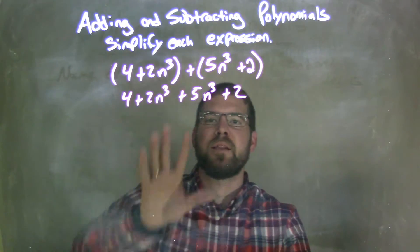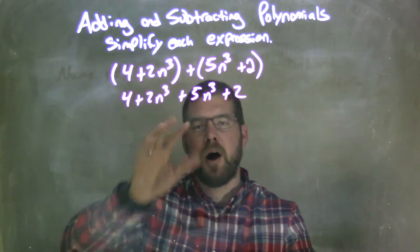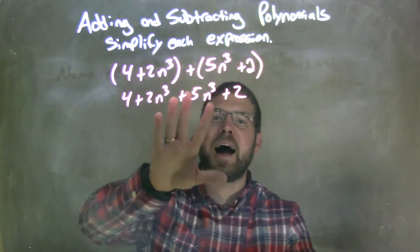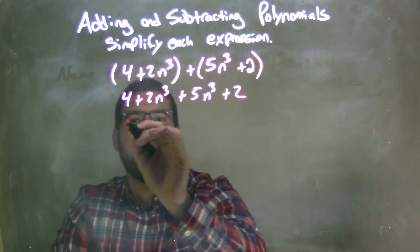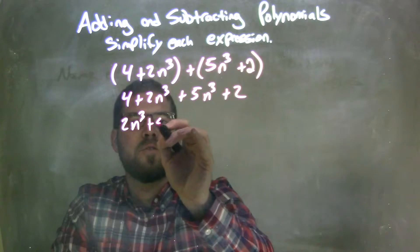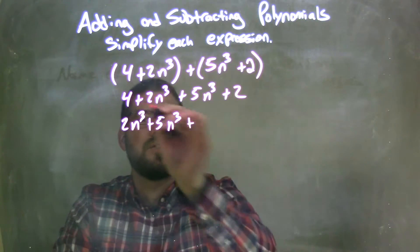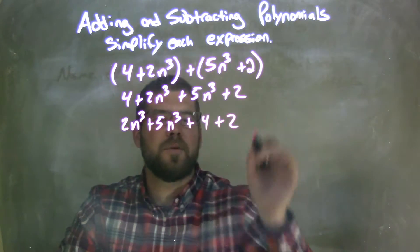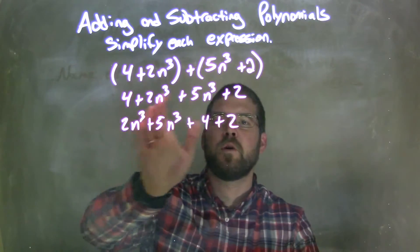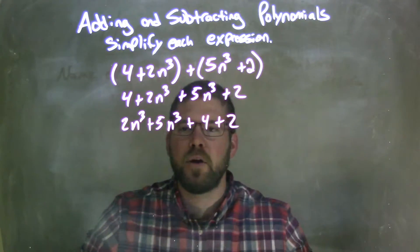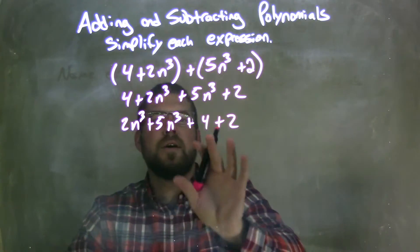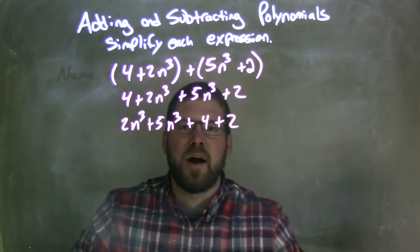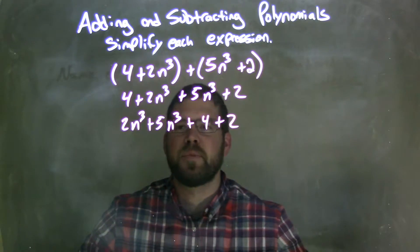Now I'm going to rearrange my like terms first. Our like terms together and my highest degree terms first. So we have the 2n to the 3rd plus 5n to the 3rd plus then 4 plus 2. I have all four terms together. I just rearranged into the commutative property and brought all my n to the 3rds to the left and on the right-hand side my numbers, my constants.